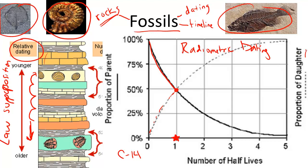And the daughter isotope over here, which is commonly nitrogen — an isotope of nitrogen, nitrogen-14 — is also at 50% of its isotope left in its composition. So when we look at this fossil, if there is a 50-50 proportion of each of these isotopes in it, then we know that they have reached one half-life. And then we can calculate the ratios and uncover the age of the rock.